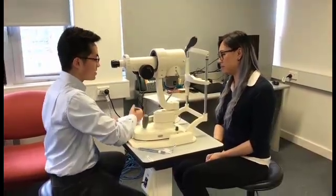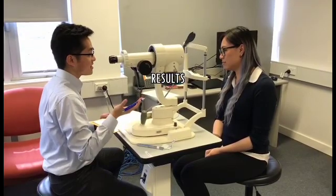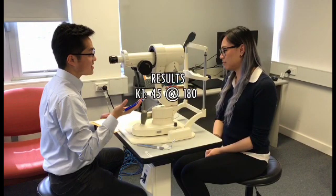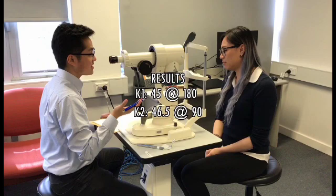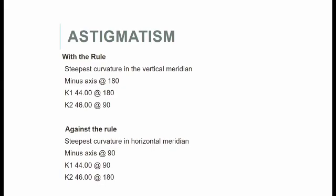Ms. Ling had a K1 reading of 45 at 180 degrees, representing the horizontal meridian, and a K2 reading of 46.5 at 90 degrees, representing the vertical meridian. This means that her astigmatism is with the rule, as her steepest curvature is in the vertical meridian. Against-the-rule astigmatism has its steepest curvature in the horizontal meridian rather than the vertical.